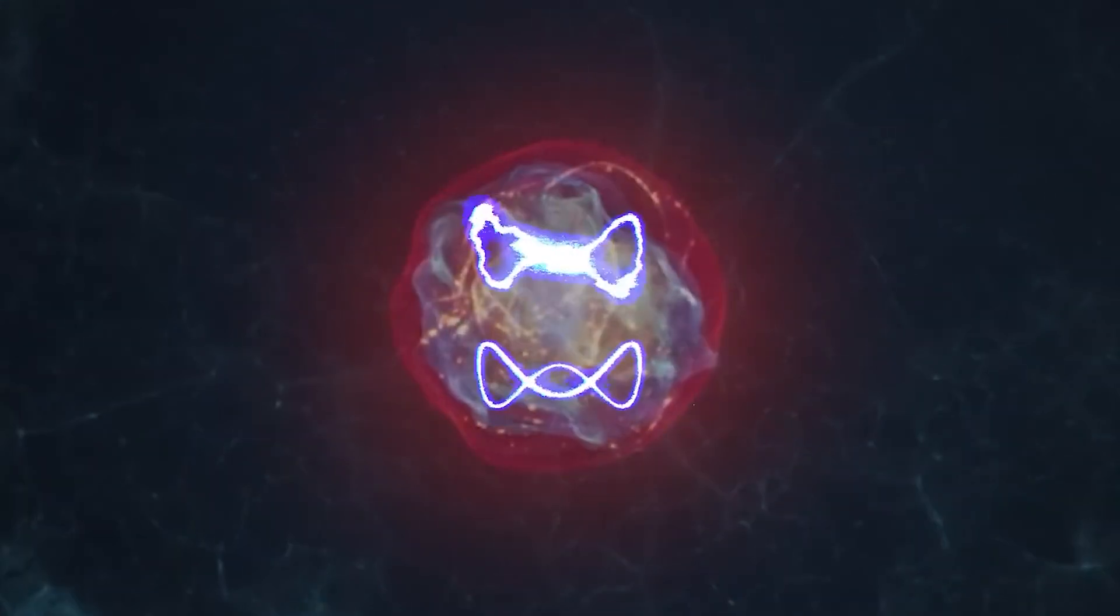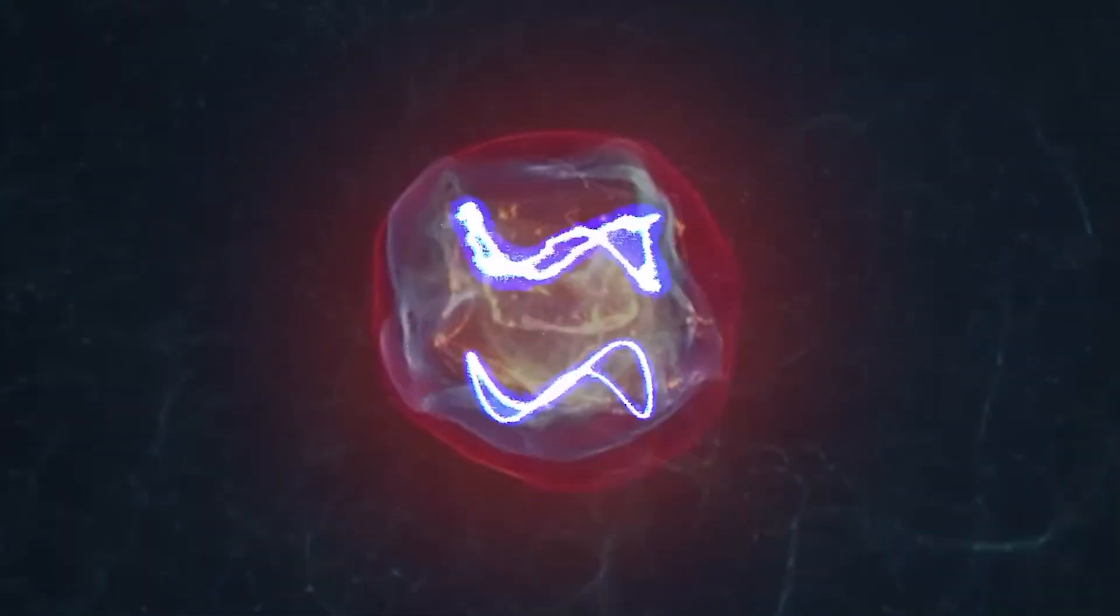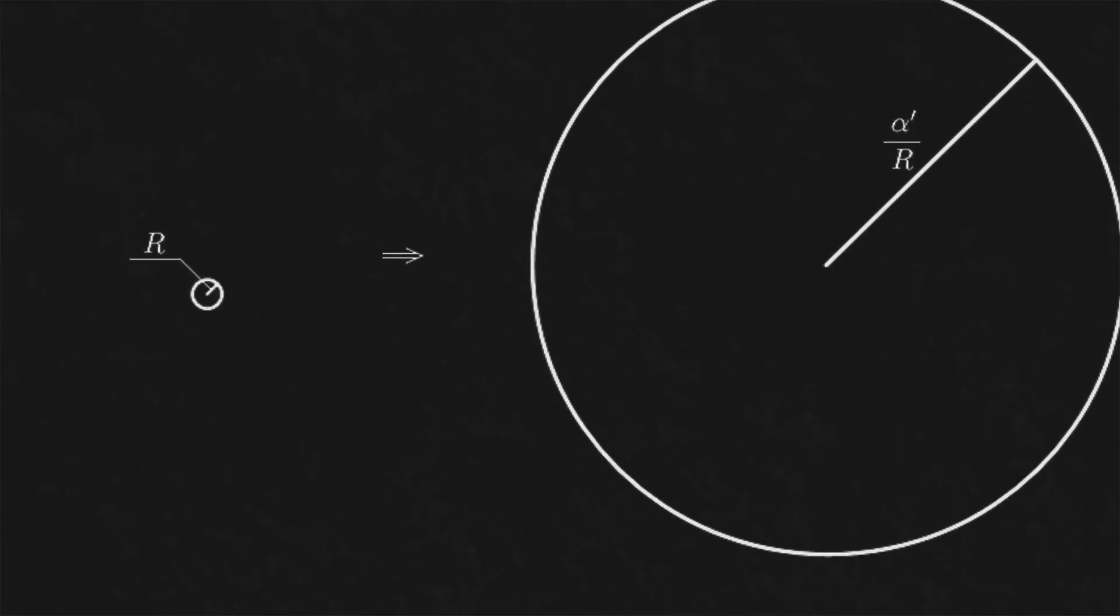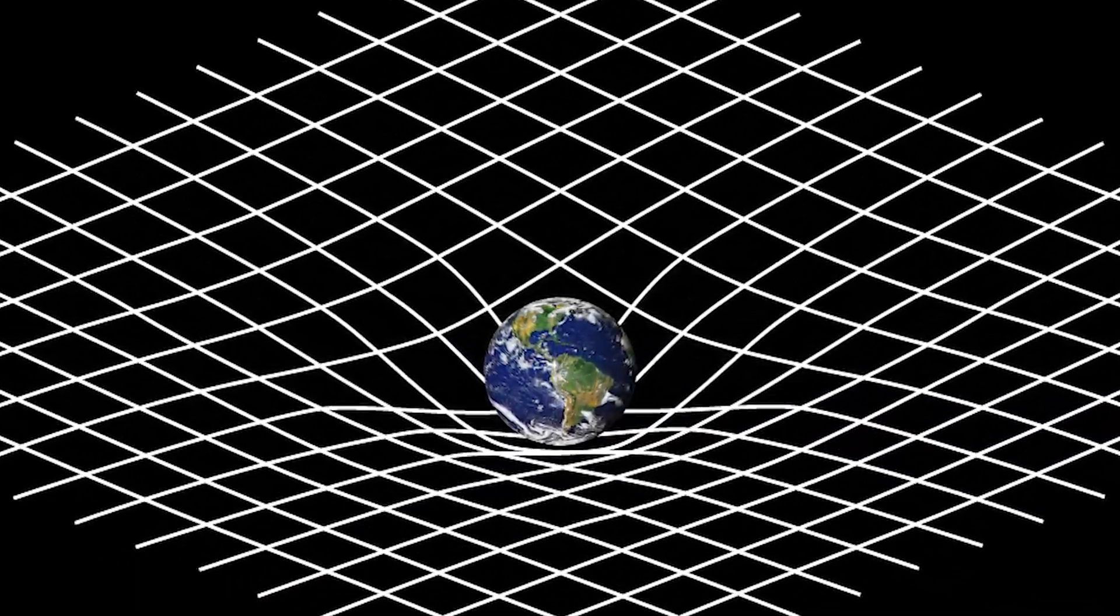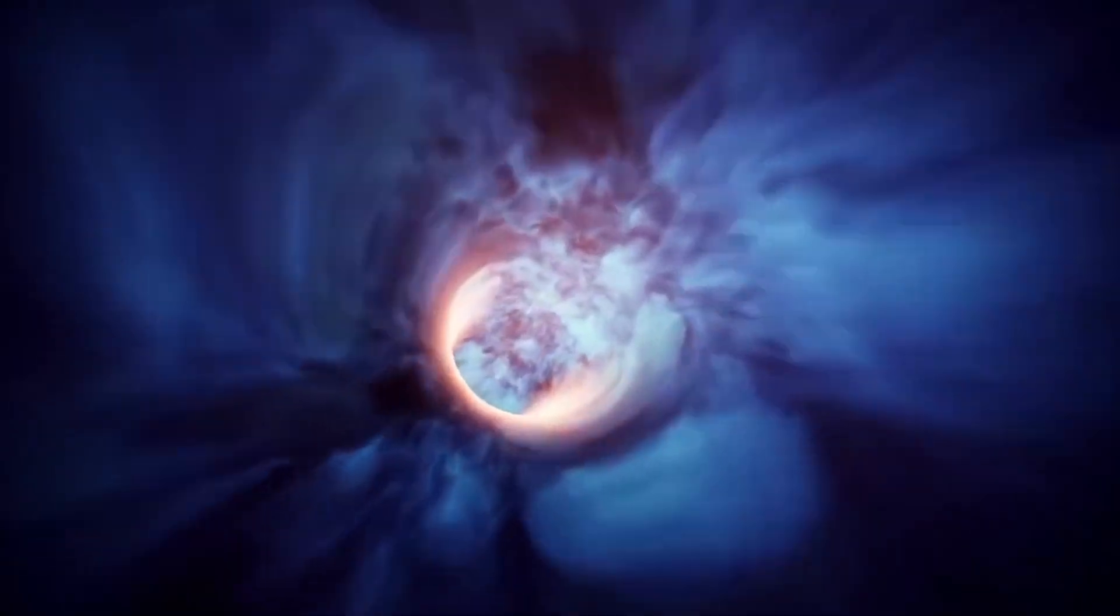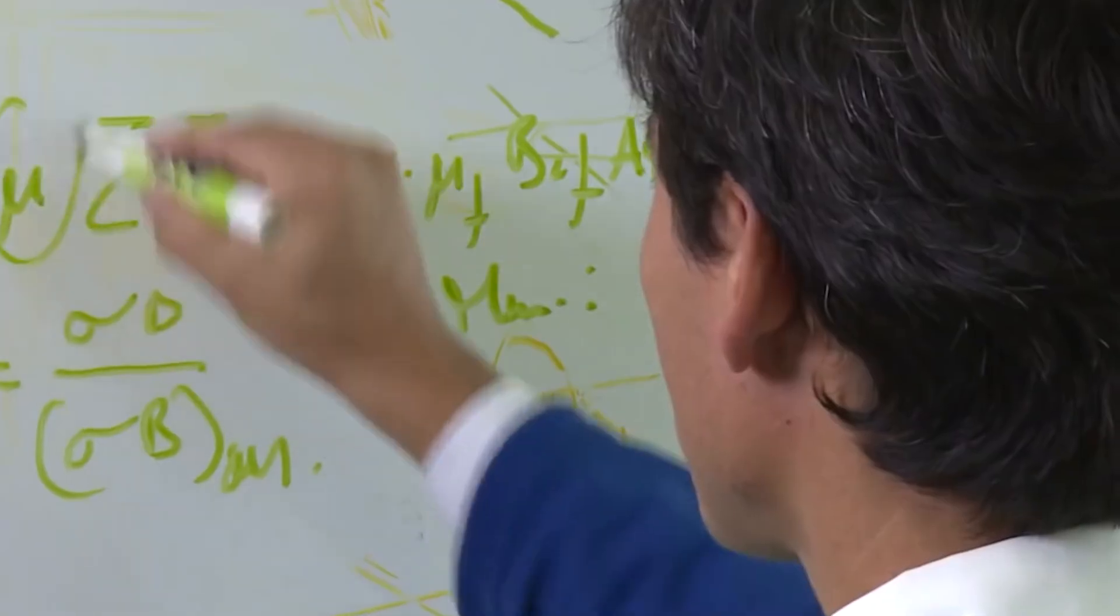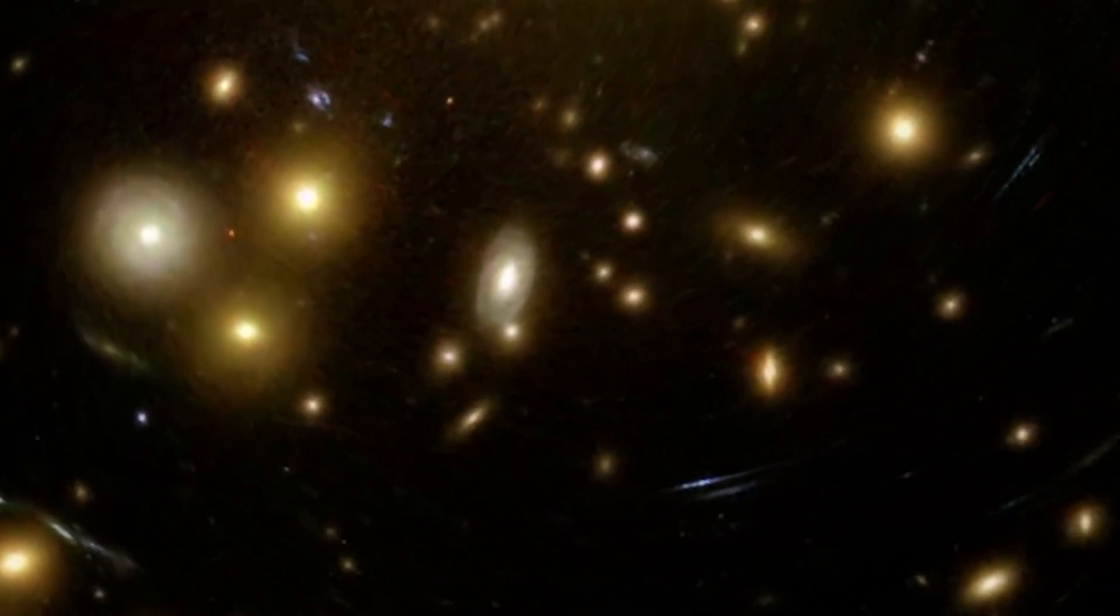It's a dynamic interplay where space and time are not fixed, but incredibly responsive entities. According to Einstein's groundbreaking theory, aptly named General Relativity, this responsiveness isn't limited to matter alone. It extends to all forms of energy, encompassing pressure, momentum flux, and more. In essence, General Relativity represents an expansive evolution of Einstein's earlier work, Special Relativity, charting a path toward a deeper understanding of the fundamental forces that govern our universe.